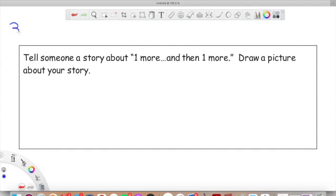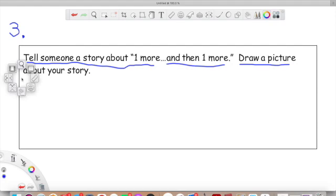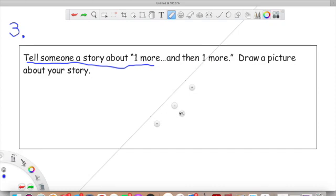This is the final problem that you're going to be working on in this rotation. I'm going to read this to you, and then you're going to think about what you need to do. Let's read this together. Tell someone a story about one more of something. And then one more. Draw a picture about your story. So here, you're going to think about a time where you had one more and then one more.